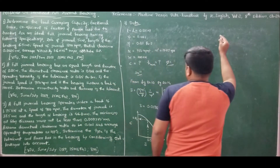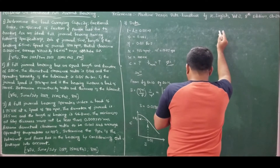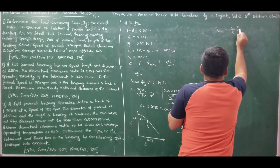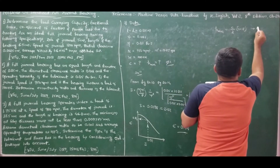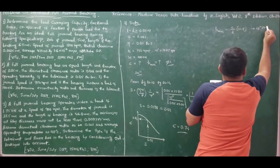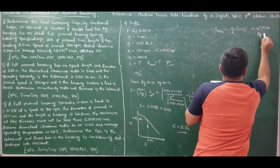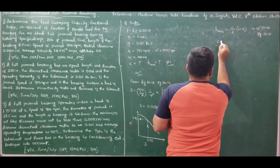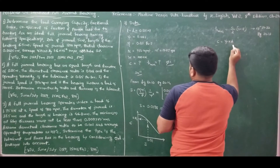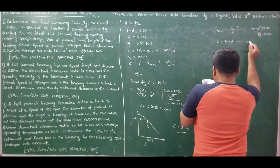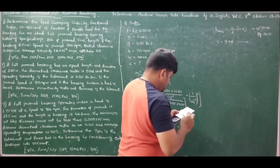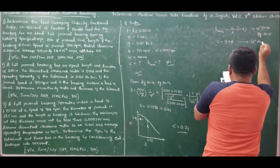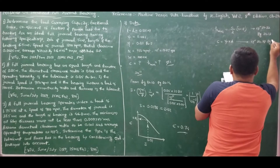Using epsilon = 0.74, we find the minimum film thickness H_min (equation 24.32, page 24.13): H_min = (C/2) × (1 − epsilon). Diametral clearance C = Xi × D = 0.001 × 0.05 = 5 × 10⁻⁵ m. Therefore H_min = (5 × 10⁻⁵ / 2) × (1 − 0.74) = 6.5 × 10⁻⁶ m.